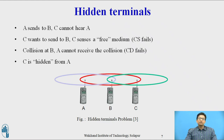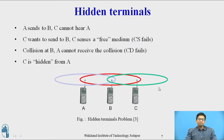When C wants to send data to B, C senses the medium as free because C is unaware of the transmission going on between A and B. So carrier sense fails. When we apply CSMA/CD and C senses the medium as free, carrier sense fails. And when collision happens at B, A cannot receive this collision, so collision detection also fails. In this way, C is hidden from A, or A is hidden from C, and the hidden terminal may cause a collision.